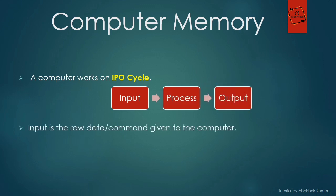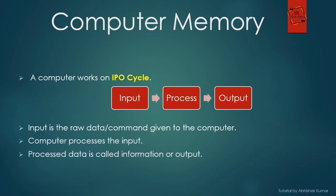First of all, a computer takes input from the user, then the processor processes the data, and then that processed data is known as output — or you can also call it information. Now, as we require input devices to get input to the computer, a processing device — that is the CPU — to process, and output devices to display or get the output.